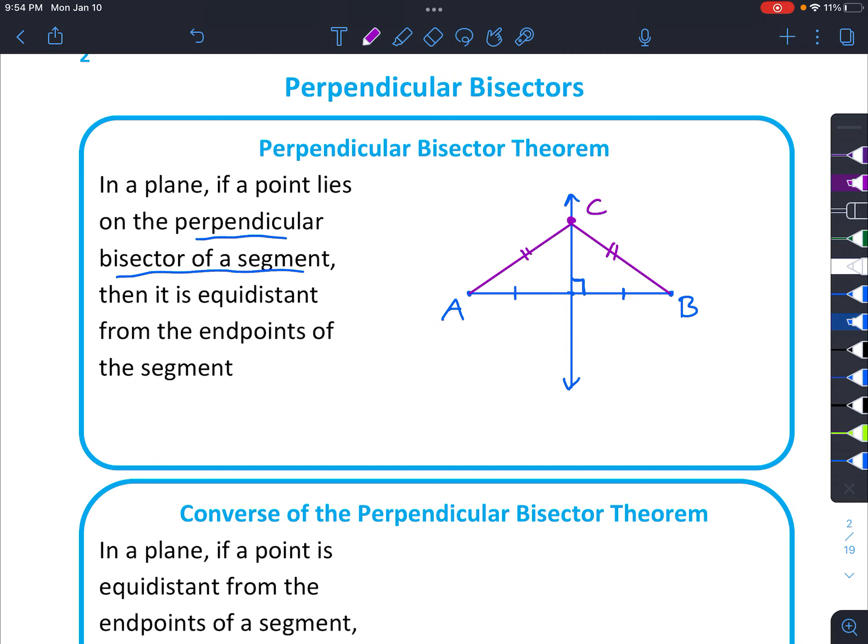And let's write a conclusion. So if CP is the perpendicular bisector of AB, then CA equals CB.